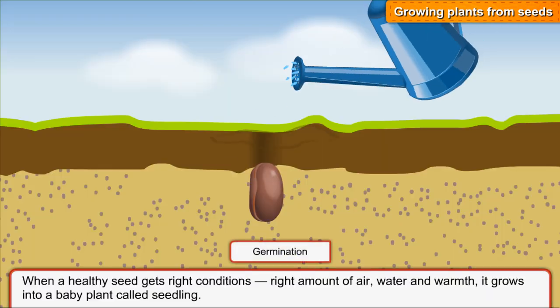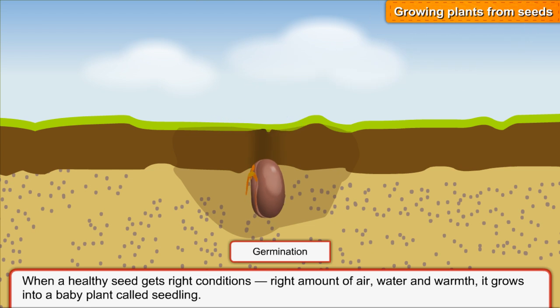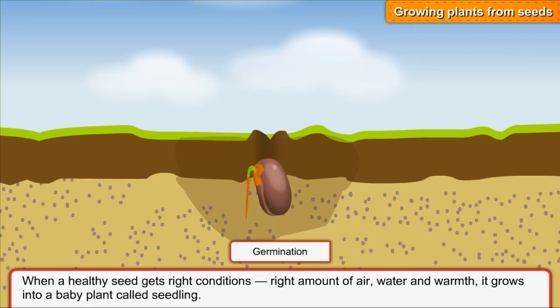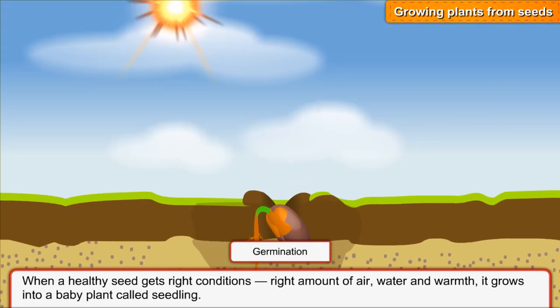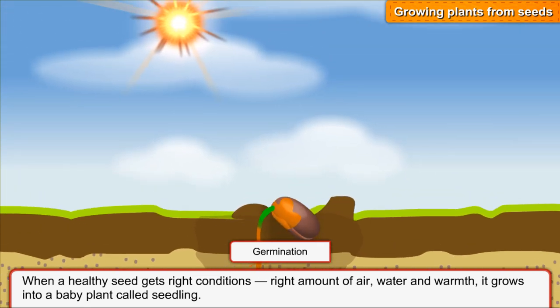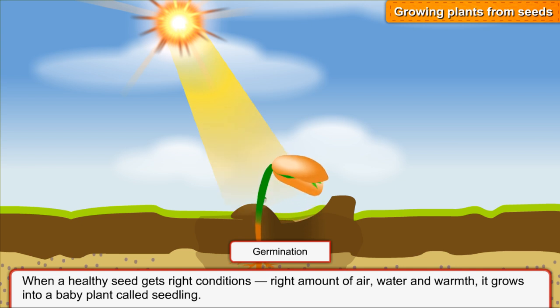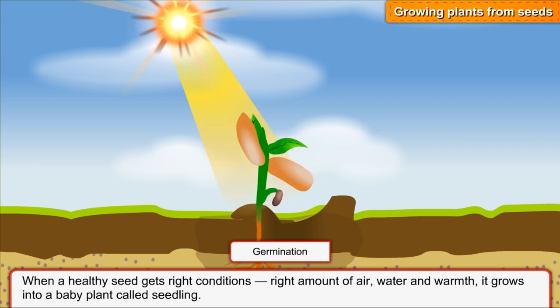When a healthy seed gets the right conditions — the right amount of air, water and warmth — it grows into a baby plant called a seedling.